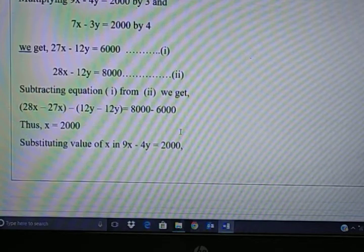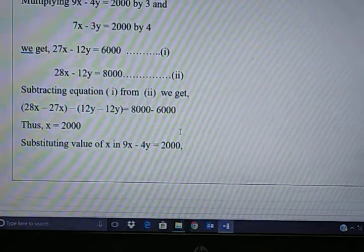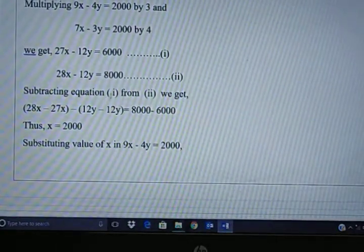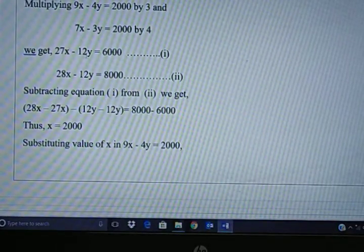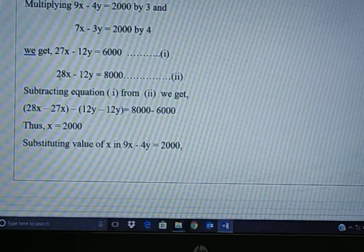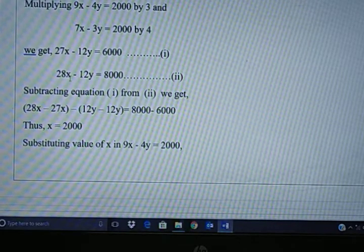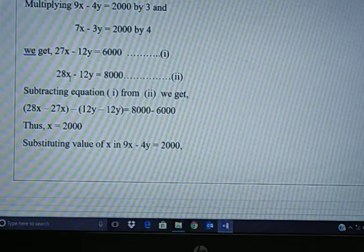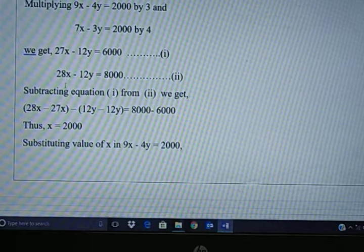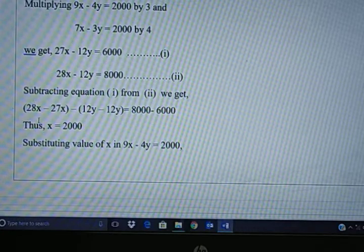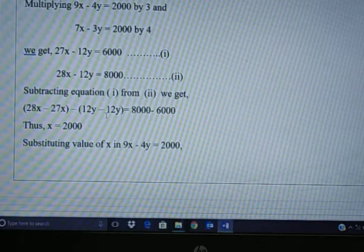You can add or subtract, either anything you can do. Here I am subtracting equation 1 from 2. Why 1 from 2? The second equation has 28x which has greater value. When you subtract equation 1 from 2 you get 28x minus 27x and 12y minus 12y equals 8000 minus 6000.